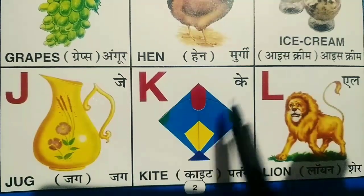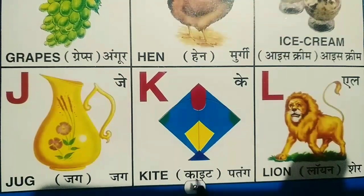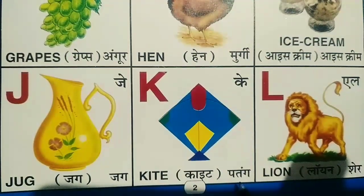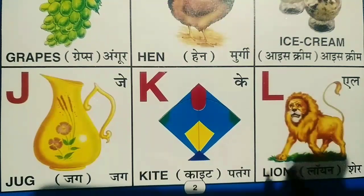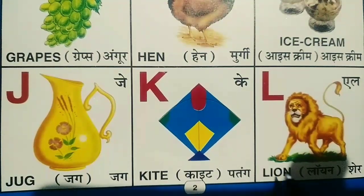K for kite. Kite means patang. L for lion. Lion means sher.